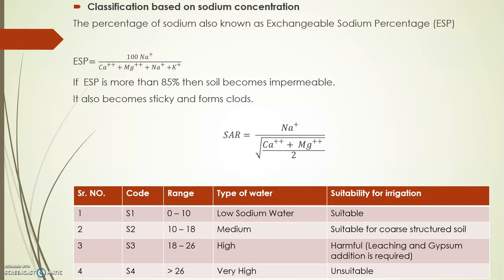The next classification is based on sodium concentration using the ESP formula. If ESP is more than 85%, the soil becomes impermeable, sticky, forms clods when wet, and crusts when it dries — so ESP should not exceed 85%. There are four classes based on the range of ESP: if less than 10, suitable for all crops and all soil types; up to 26, leaching and gypsum addition can make it usable; above 26, not suitable for irrigation.